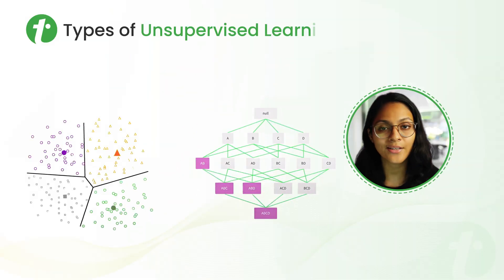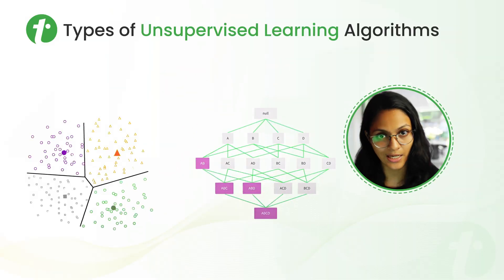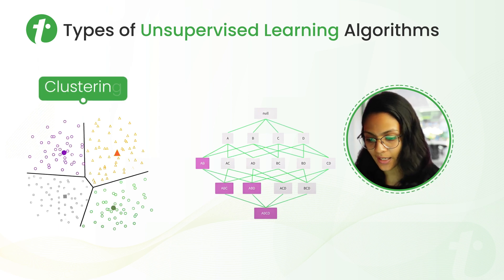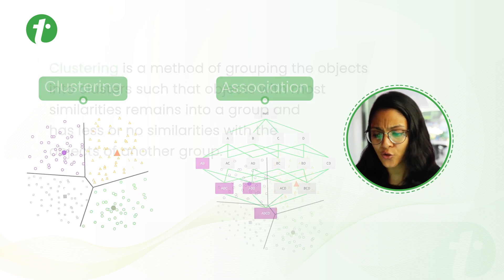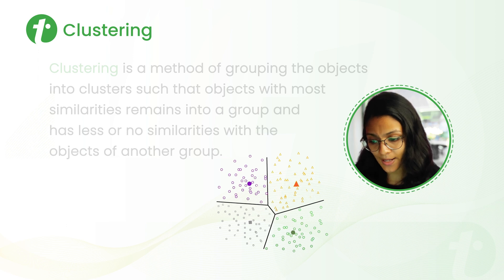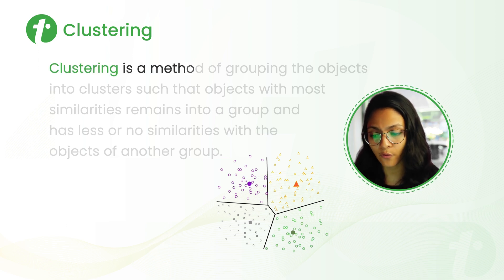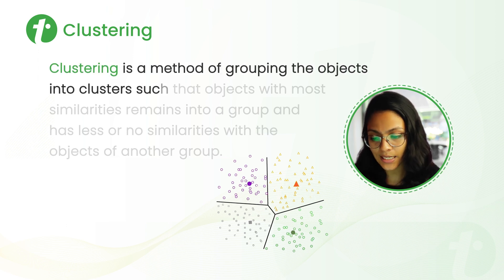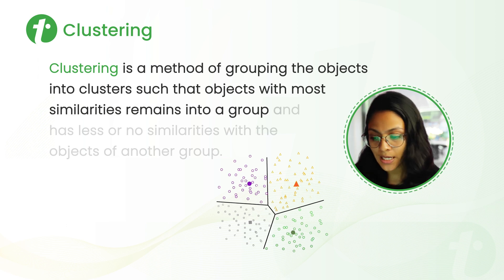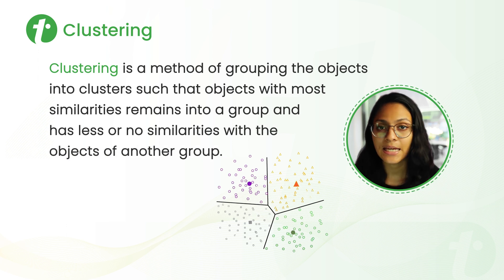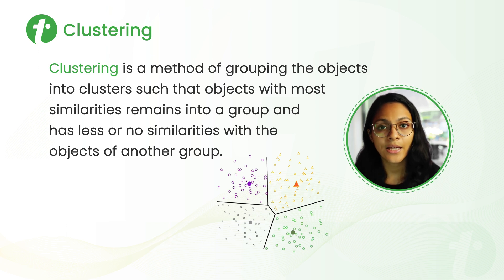Now let's talk about the types of unsupervised machine learning algorithms. There are two types: first is clustering and second is association. From definition, clustering is a method of grouping objects into clusters such that objects with more similarities remain in a group and have less or no similarity with the objects of another group. In simple language, all the objects in one cluster have more similarities than the objects in another cluster.